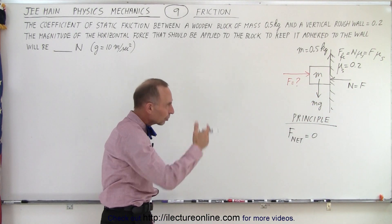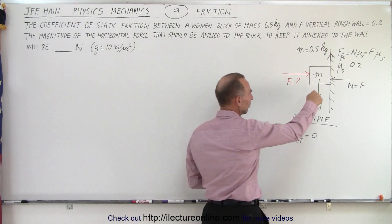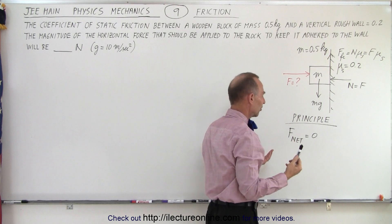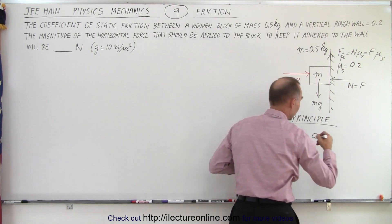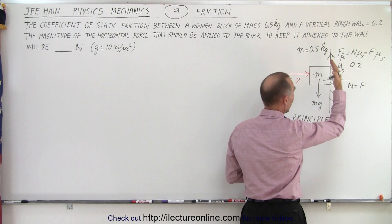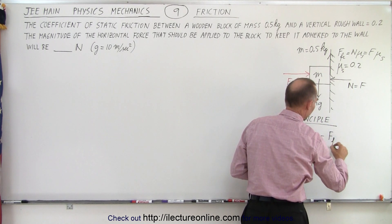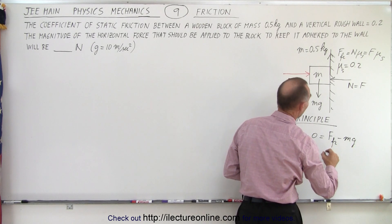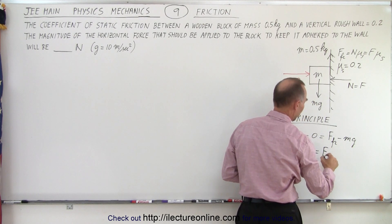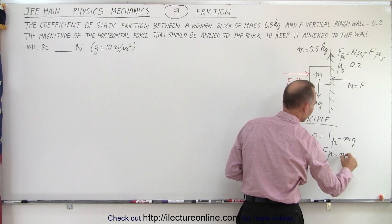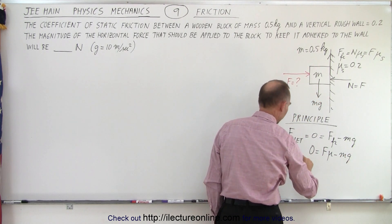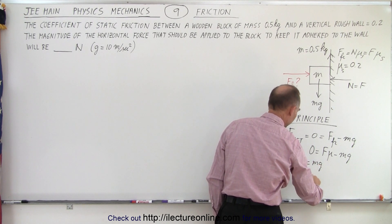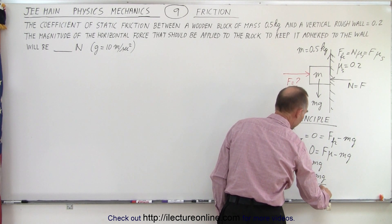So in the vertical direction, there are two forces. There is the weight pulling down, and the friction force pulling back up. And so essentially, since there's no net force, that would be equal to the force going up, which is the friction force minus the mg going down, or 0 is equal to the friction force, which is the force applied times mu minus mg. In other words, the friction force times mu equals mg, or the friction force is equal to mg divided by mu.